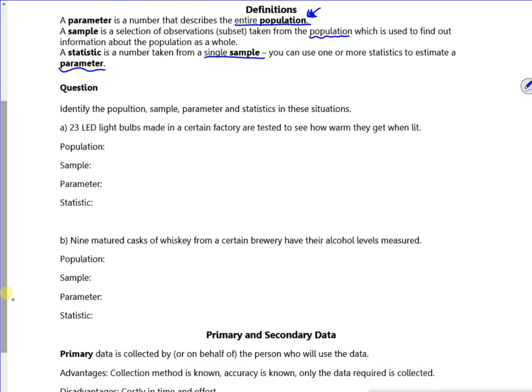We've got a question here. Let's try and identify what we've got. It says identify the population, sample, parameter, and statistics. You've got 23 light bulbs made in a certain factory tested to see how long they last.